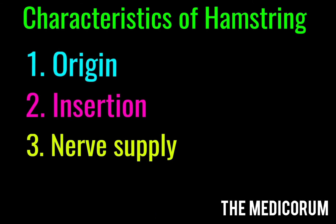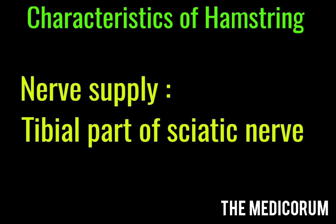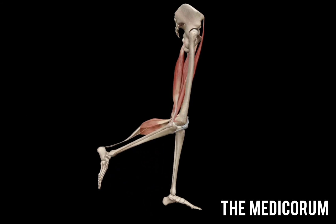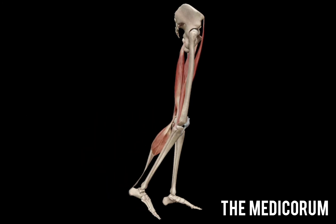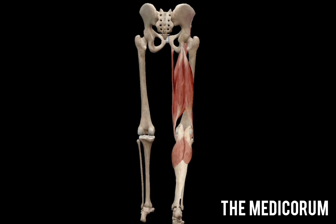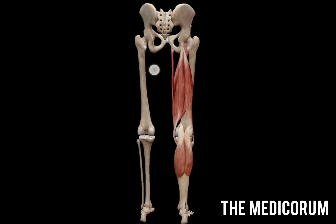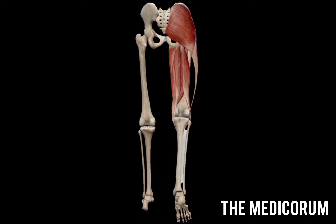The third unique feature is nerve supply: all the hamstring muscles are supplied by the tibial part of the sciatic nerve. The fourth and last characteristic is action: all the hamstrings act as flexors of the knee and also as extensors of the hip.